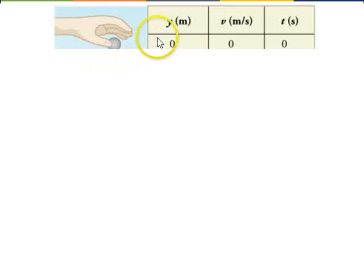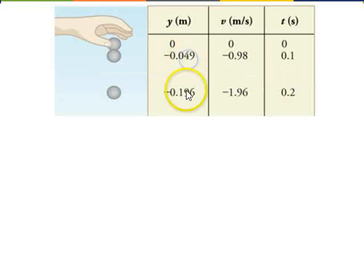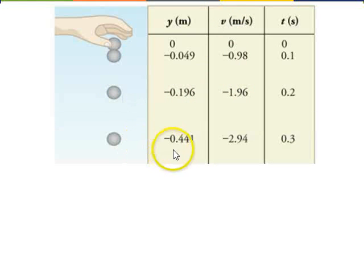So we can make a table of the y position in meters, the speed in meters per second, and the time in seconds of a ball dropped from rest. We can define its starting point to be y equals zero. After 0.1 seconds, it now has a velocity of negative 0.98 meters per second squared, and that's how far it will fall. After 0.2 seconds, it will be going negative 1.96 meters per second, and it's fallen a little further.